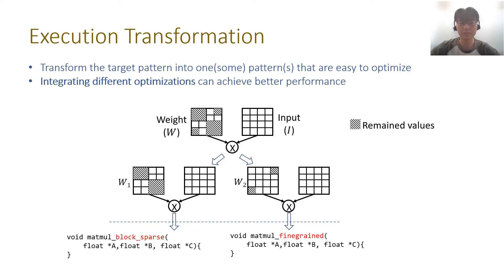After sparsity propagation, the new sparsity pattern in the model may be complex and hard to optimize. To better leverage sparsity, SPARTA transforms the target sparse pattern into one or several patterns that are easy to optimize. For example, SPARTA transforms a given sparse pattern into a 2×2 block sparse pattern and a very sparse fine-grained pattern. In this way, we can combine block sparse kernel optimization and fine-grained sparse kernel optimization to better leverage sparsity. Therefore, transformation can find the best kernel optimization or combination of kernel optimizations for the target sparsity pattern.